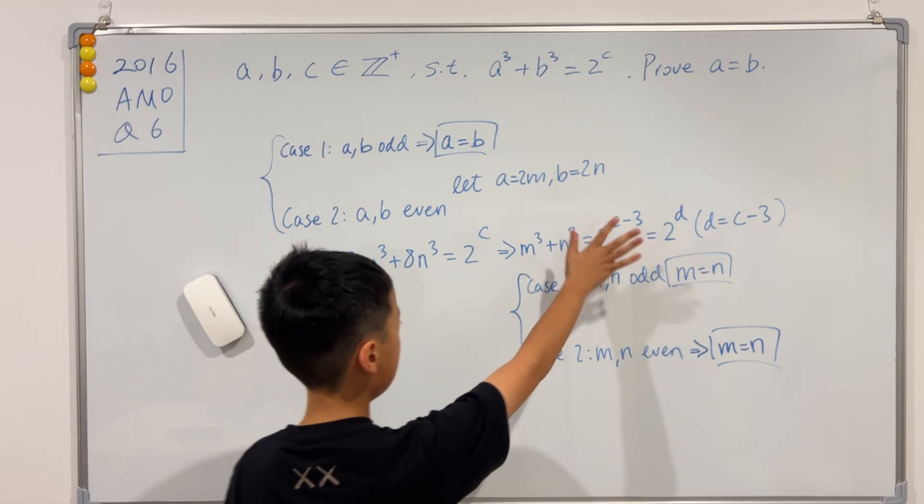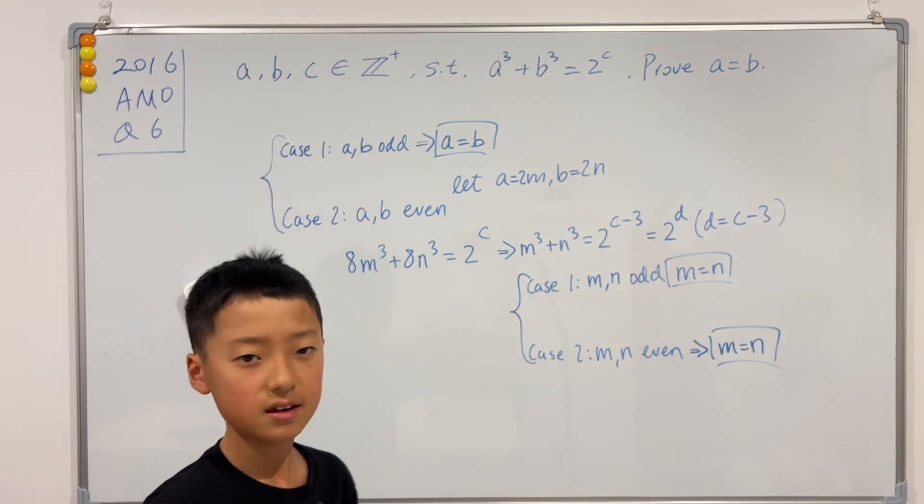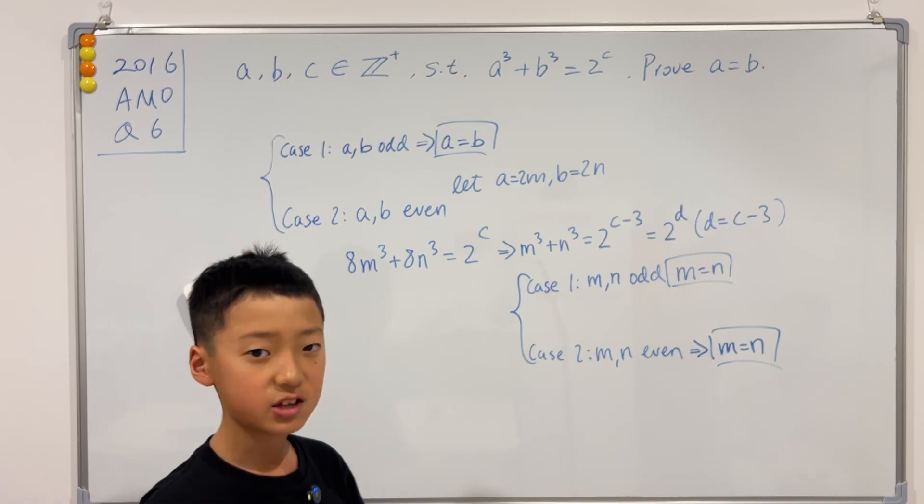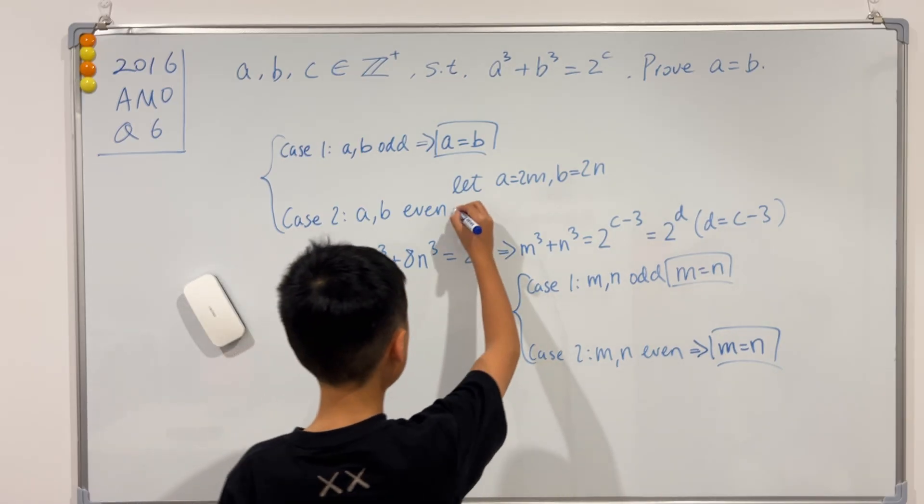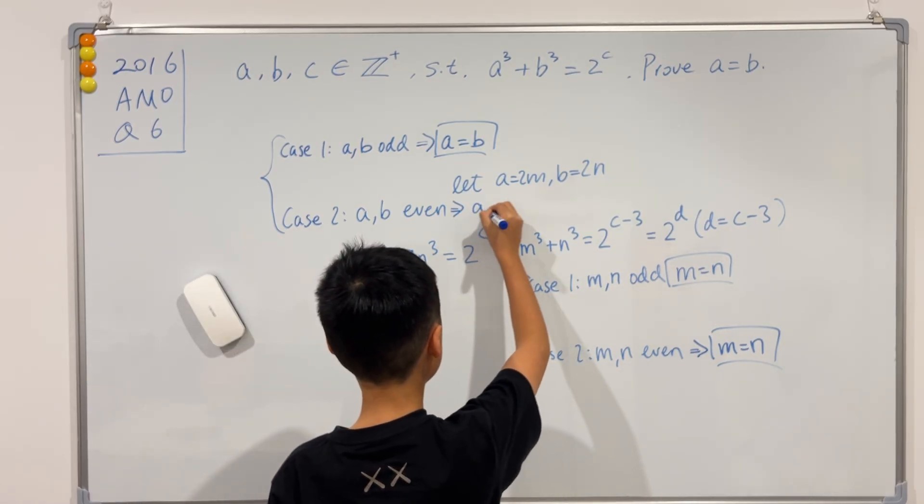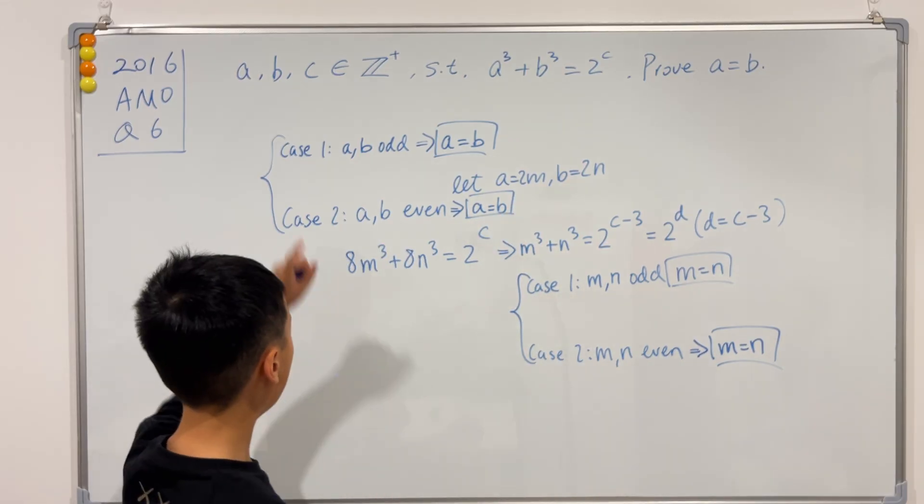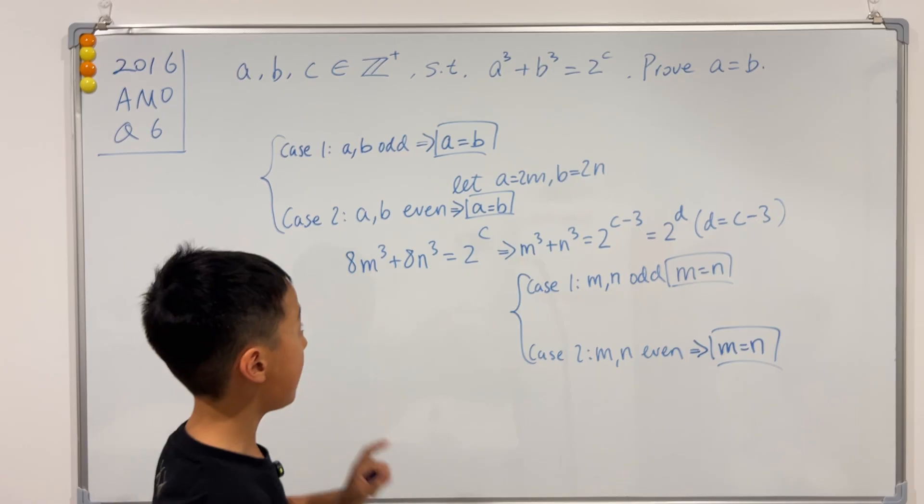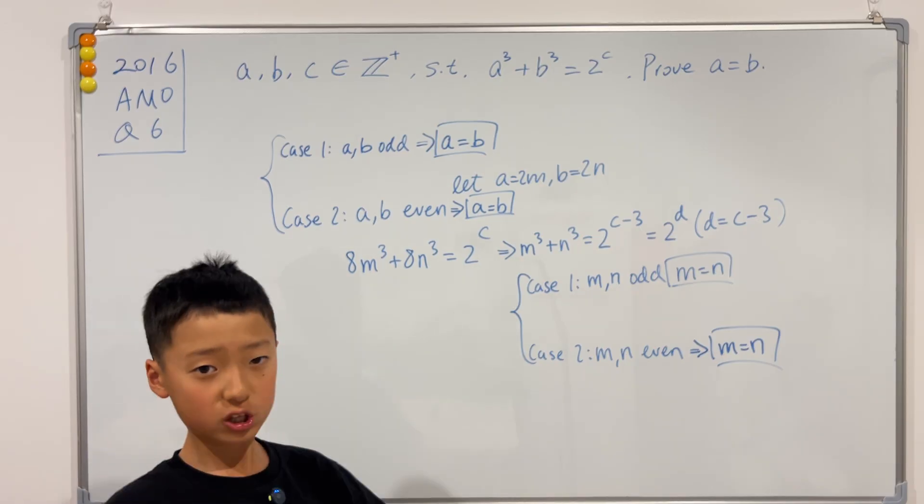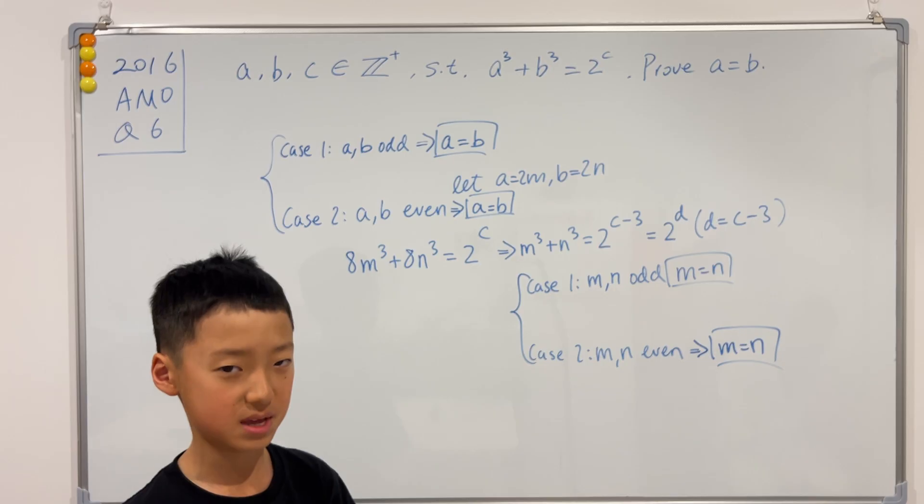So now we know that from here, m has to equal n. And that means that a has to equal b. This implies that a equals b. So in both cases, odd and even, we have proved that a has to equal b. So for the entire thing, a has to equal b.